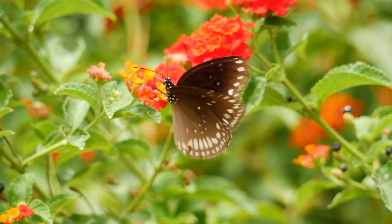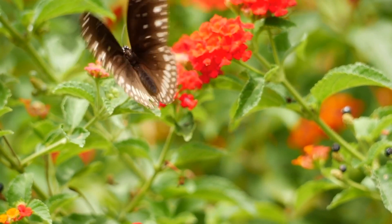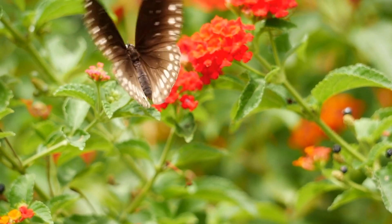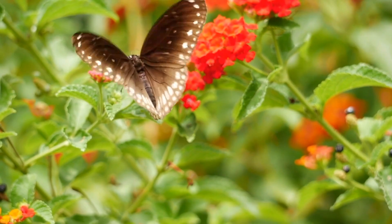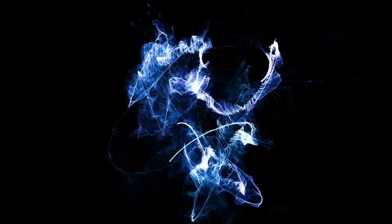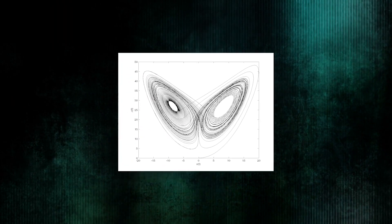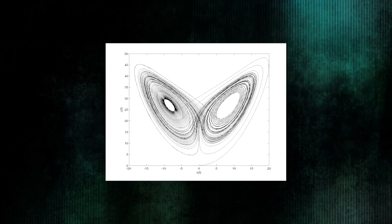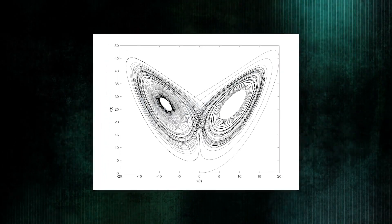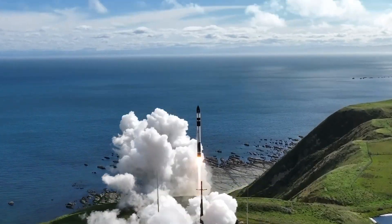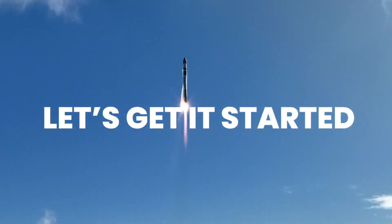Imagine trying to predict the exact path a butterfly will take as it flaps its wings. It might seem impossible, but chaos theory helps us understand why some things, despite following rules, can still seem unpredictable. Let's get started.